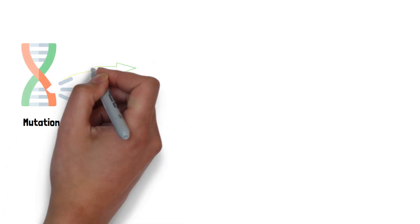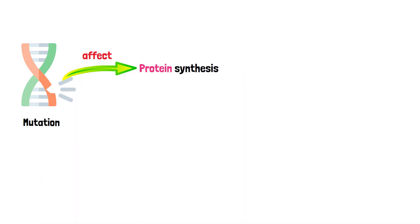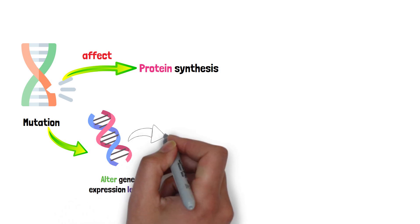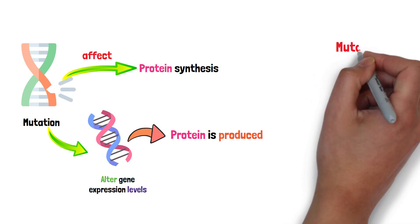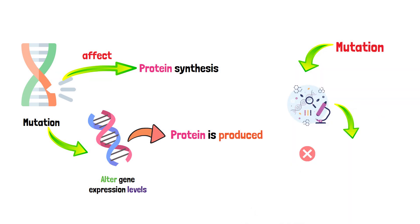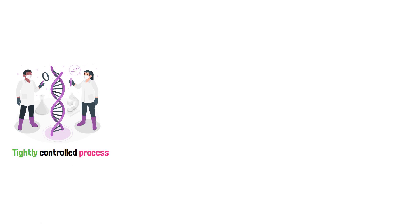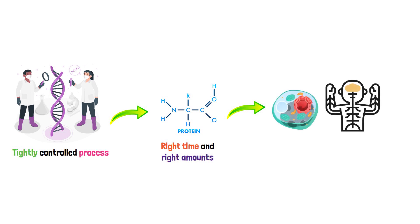Mutations can profoundly affect protein synthesis. A mutation in a regulatory region can alter gene expression levels, affecting how much protein is produced. Similarly, mutations in coding regions can lead to altered or non-functional proteins, impacting an organism's traits or health. Gene expression is a tightly controlled process, ensuring proteins are produced at the right time and in the right amounts. This regulation is crucial for the proper functioning of cells and the organism as a whole.